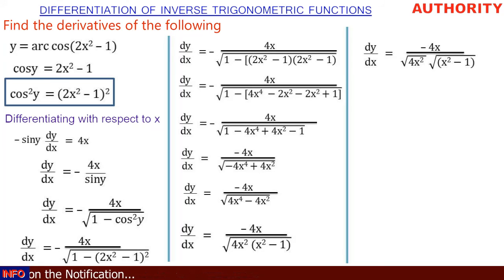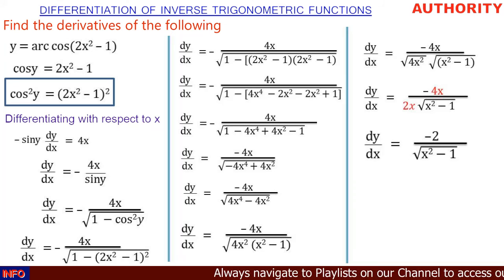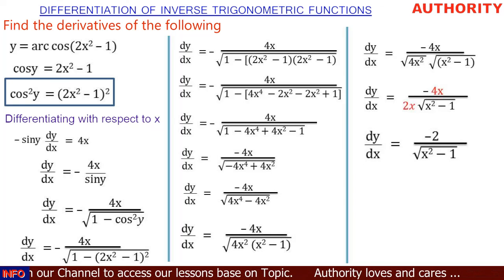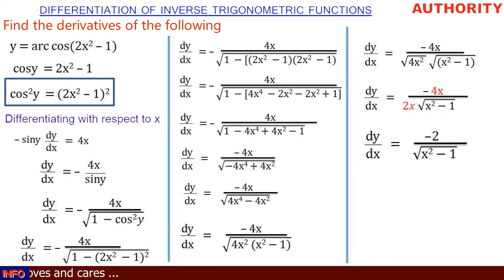Taking the square root of 4x² gives 2x. So dy/dx = -4x / (2x · √(x² - 1)). The 4x in the numerator cancels with 2x in the denominator, leaving 2. Therefore, the derivative of y = arccos(2x² - 1) is dy/dx = -2 / √(x² - 1).